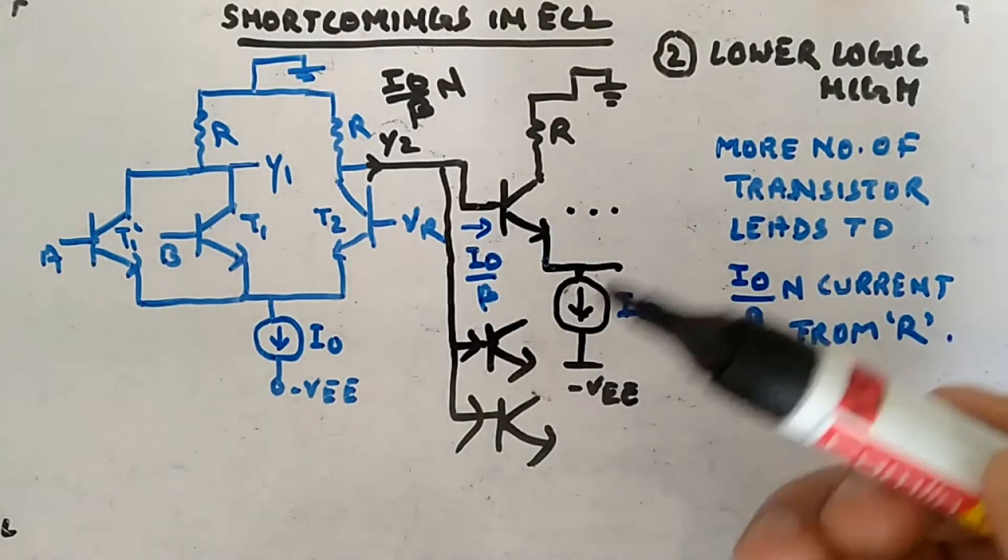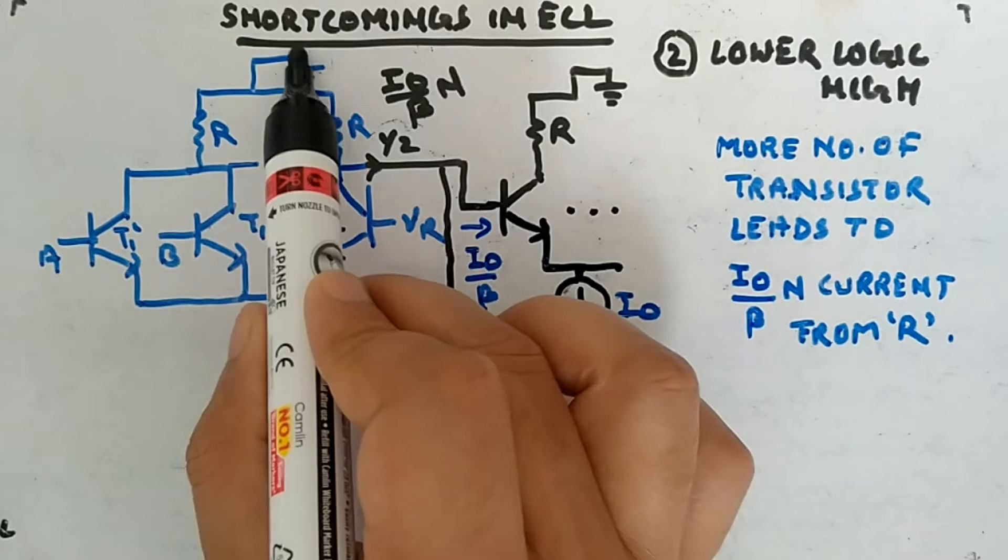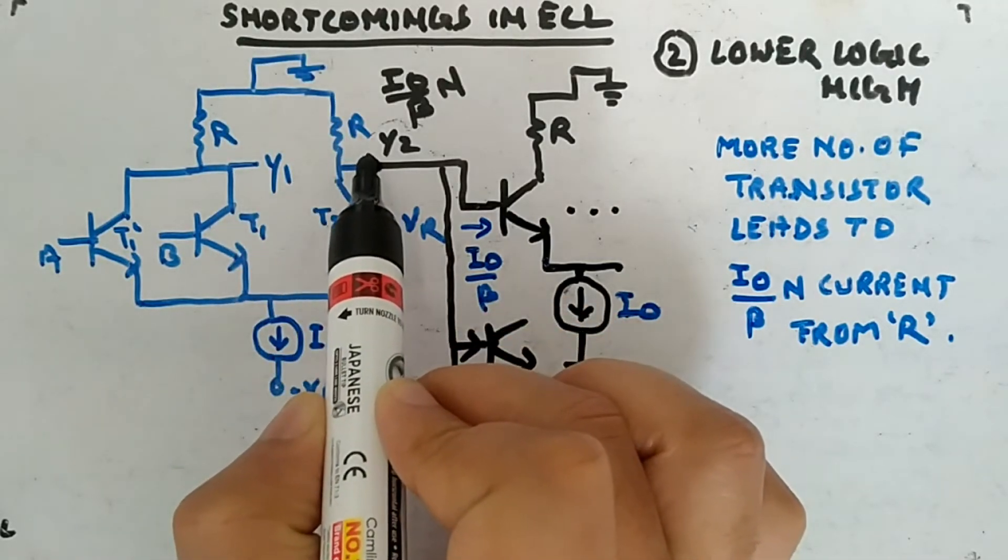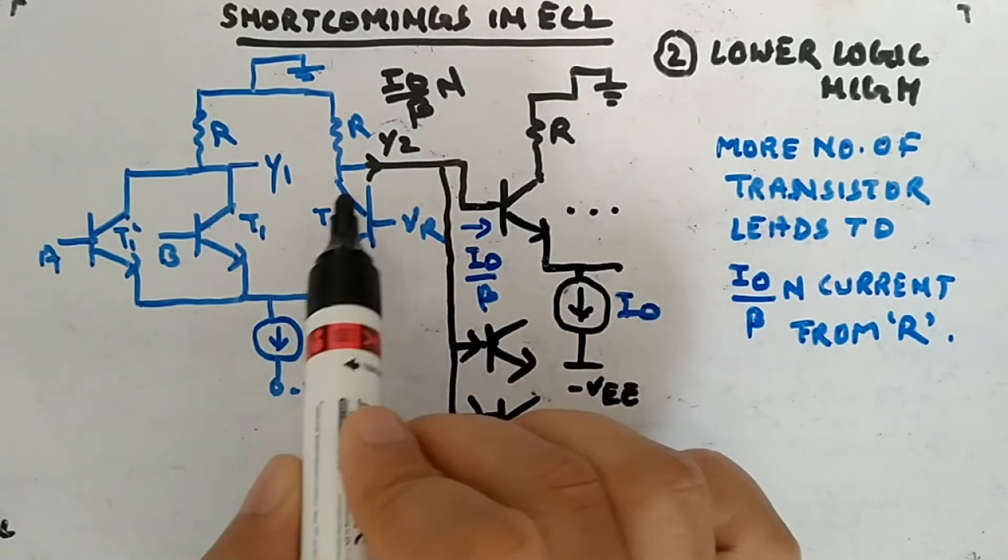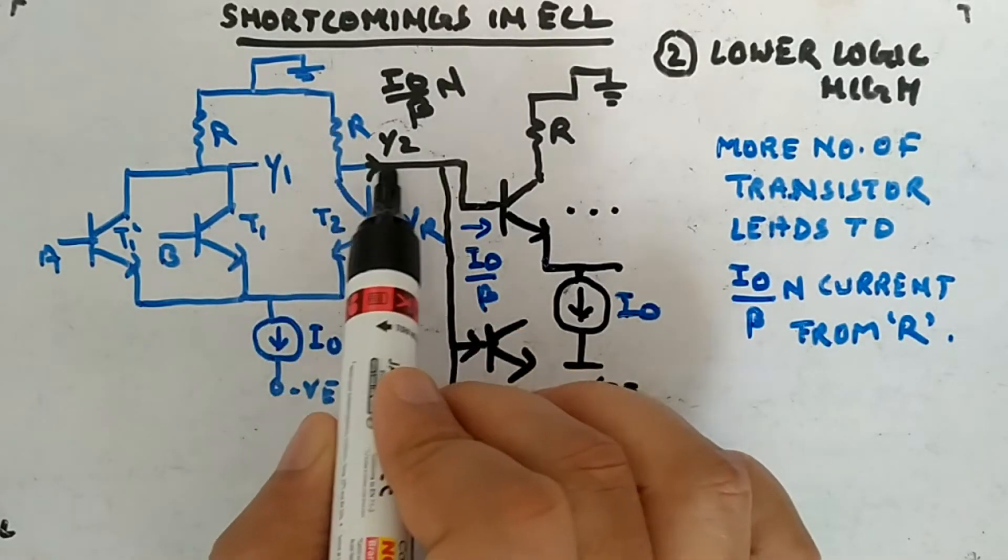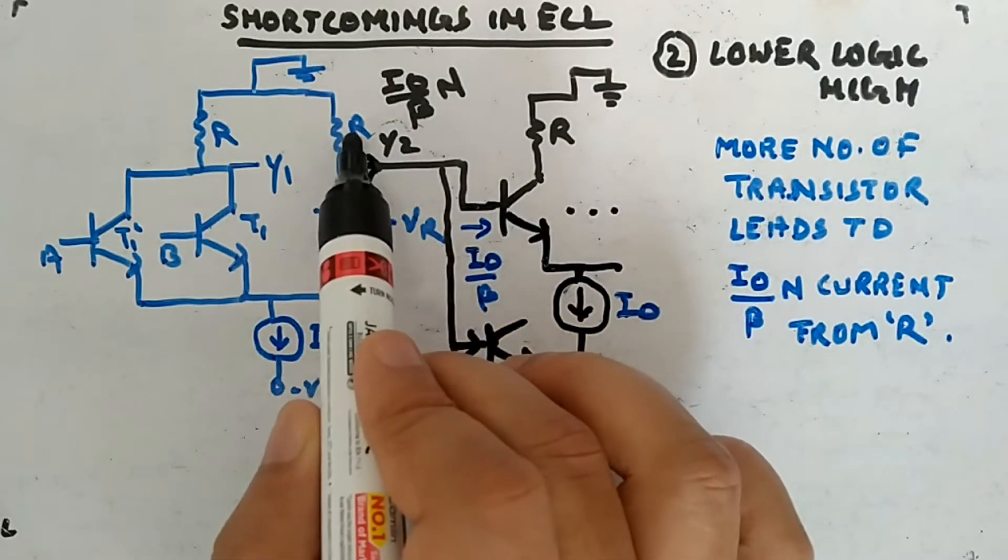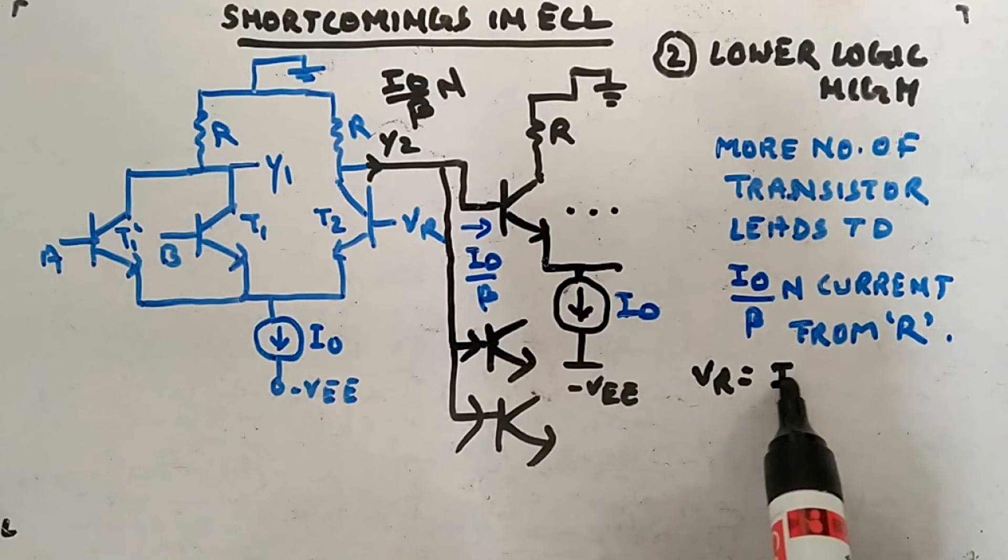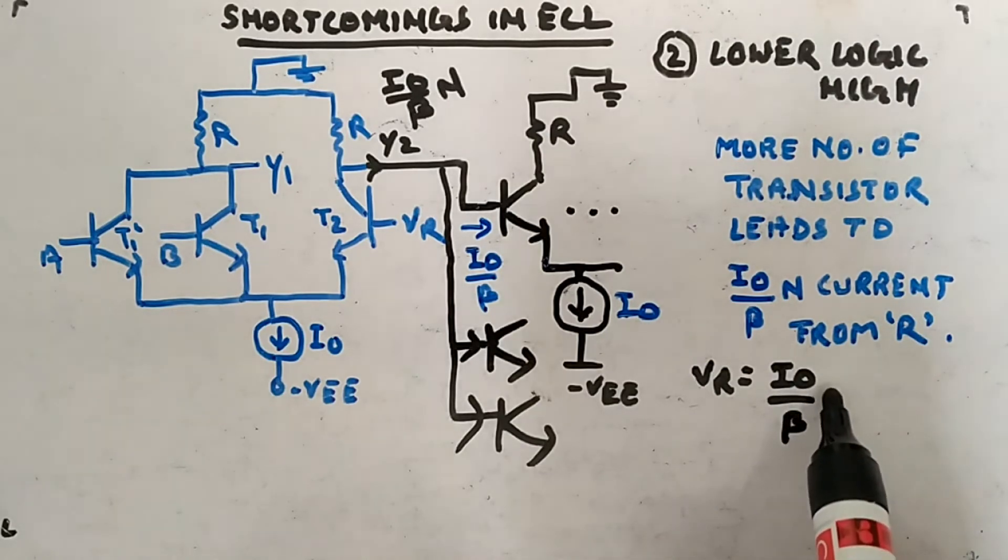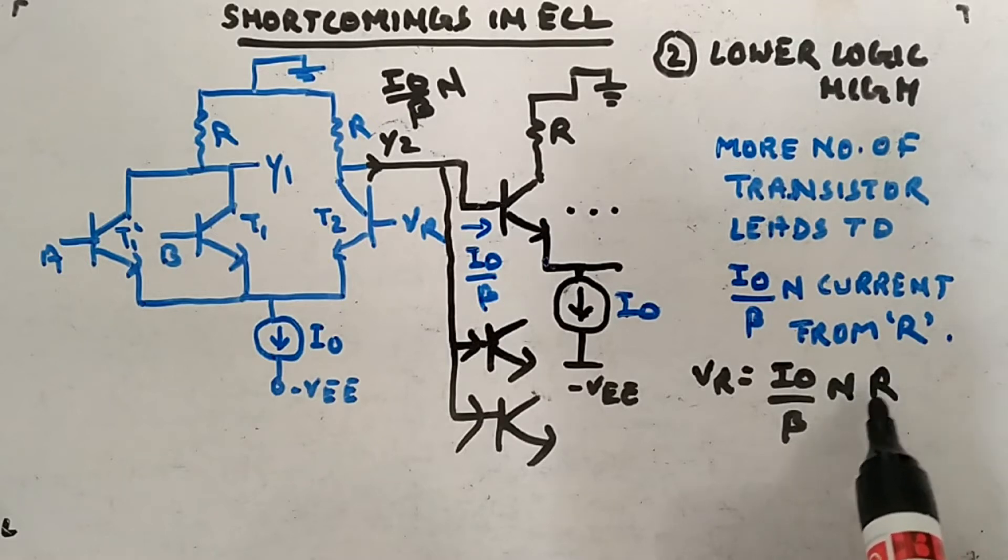When more number of transistors are attached here, you will have I0 by beta current from each of them, and n is the number of transistors. So total I0 by beta n current will come from this ground to this R. You are having logic high here since this is not conducting.